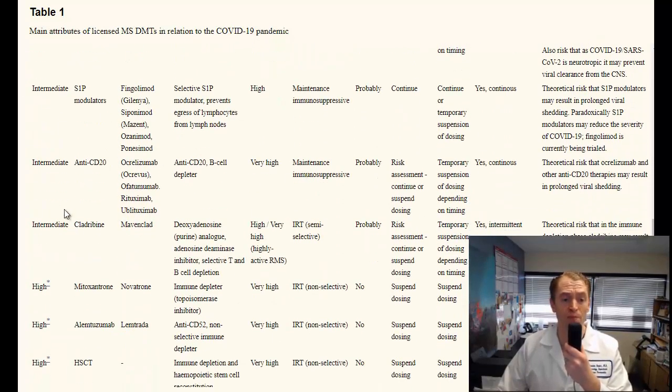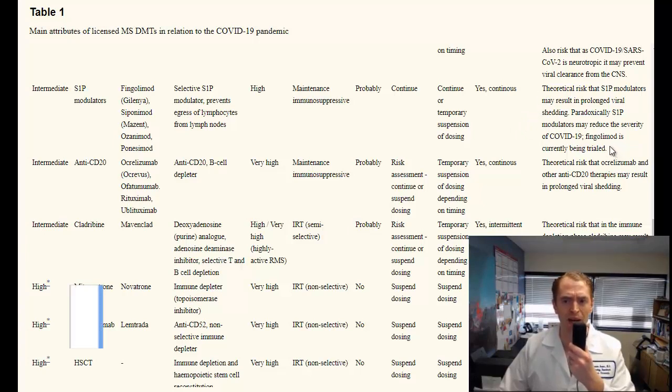Then we move on to the intermediate risk drugs, in their opinion. One category would be drugs that work on the sphingosine 1-phosphate receptor, such as fingolimod or Gilenya, or siponimod, Mayzent, or the newer drug, ozanimod. These drugs essentially trap the T-lymphocytes within the lymph nodes. So they don't kill the T-cells, but they trap them in the lymph nodes and they can make the T-cell counts very low. So in theory, they would be a little bit higher risk because they do affect the T-cells, the cells that are very involved in fighting SARS-CoV-2, the virus which causes COVID-19. That being said, generally speaking, the risk of viral infections isn't that high with these drugs. There is an increased risk of shingles and there are rare cases of PML, but they're relatively uncommon. The overall risk of viral infections isn't that high.